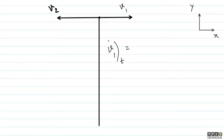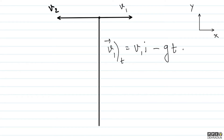So the velocity of particle 1 at any time t is: V1(t) = v1 î − gt ĵ. Here v1 î is the initial horizontal velocity component and −gt ĵ is the downward velocity gained due to gravity.